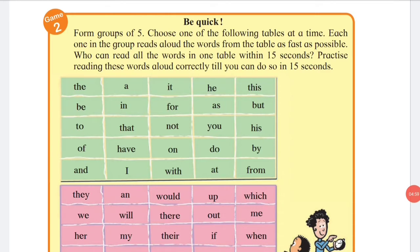Game number two: Be Quick. Form groups of five. Choose one of the following tables at a time. Each one in the group reads aloud the words from the table as fast as possible.